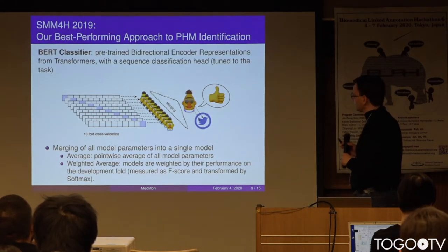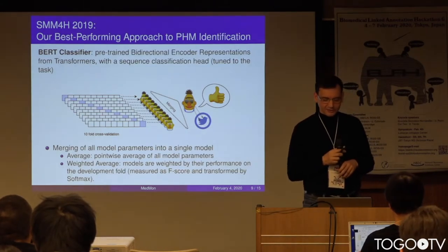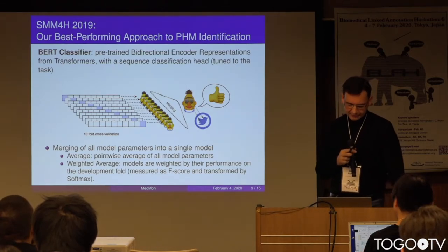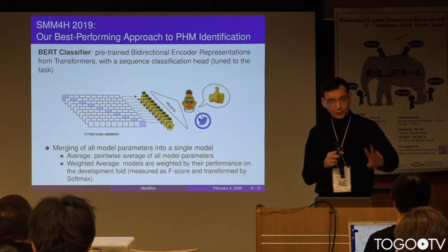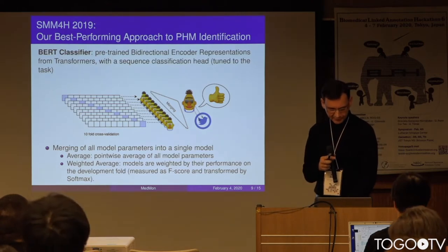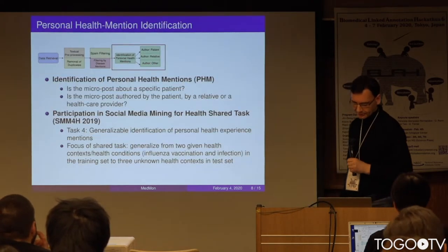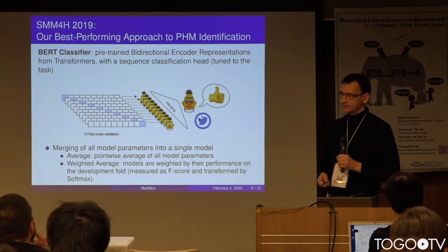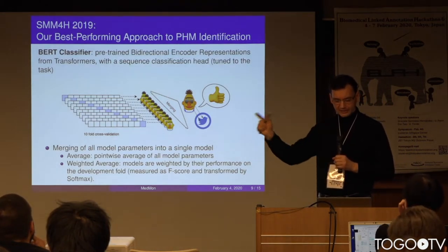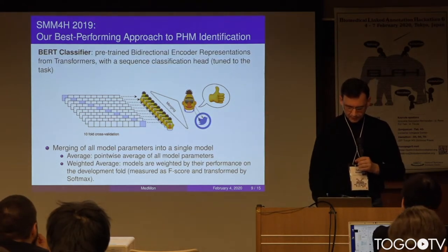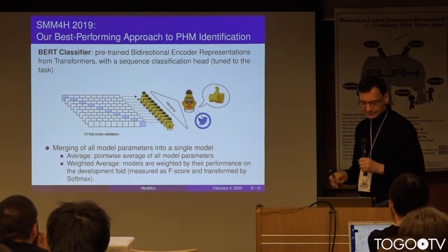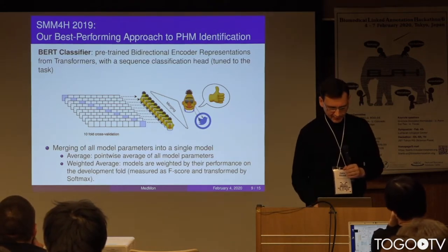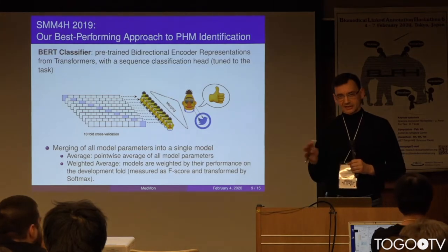We approached the problem by training BERT classifiers on the training data. We did 10-fold cross-validation, training different classifiers on both of the two types — influenza and infection — so we trained 10-fold classifiers for each of these two cases. The size of the data was very different; in one case we had 10 times more data than in the other. We then merged these 20 classifiers into a single classifier using different approaches, weighting the merging by the size of the training corpus.